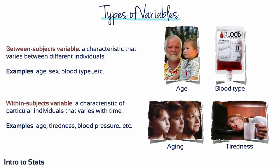Two other types of variables are between-subjects and within-subjects variables. Between-subjects variables change from person to person — for example, blood type or age differ between individuals, making them between-subjects variables. Within-subjects variables are characteristics of one person that change over time — for example, heart rate differs when sleeping versus exercising, or the number of vaccinations an individual has had changes over their life. Measuring a characteristic of an individual at different time points is a within-subjects variable.